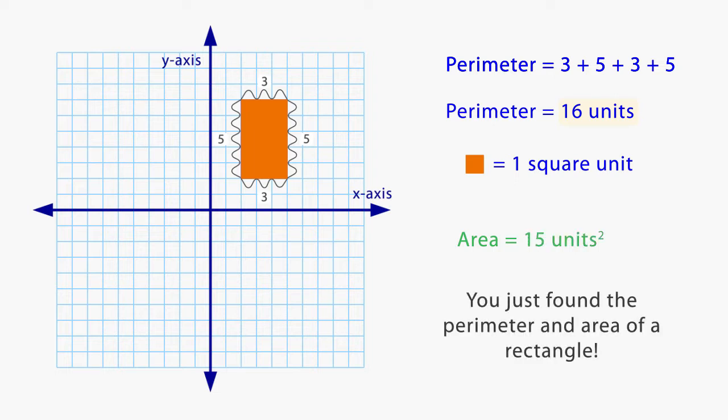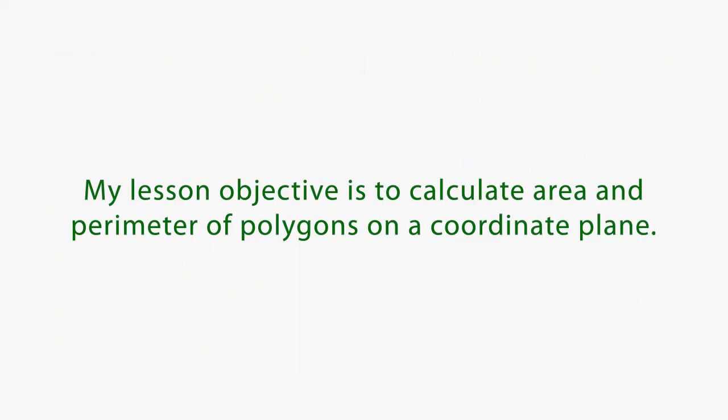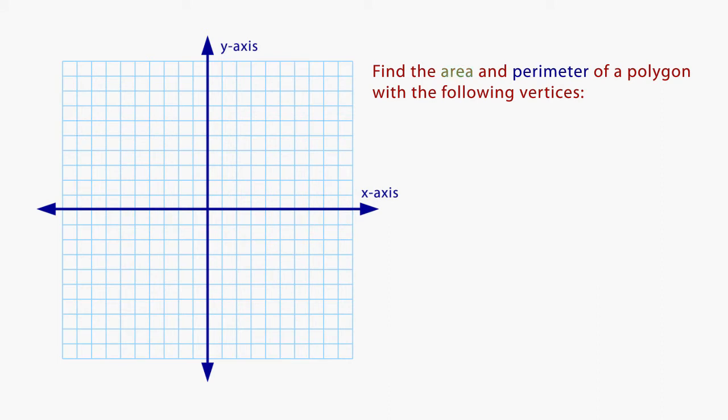You just found the perimeter and area of a rectangle. In today's lesson, you learned how to calculate area and perimeter of polygons on a coordinate plane.